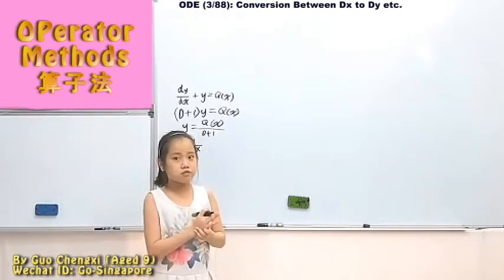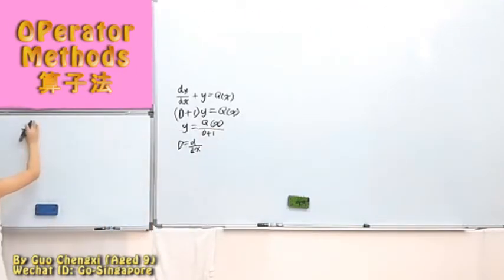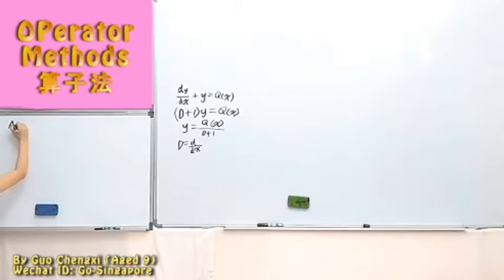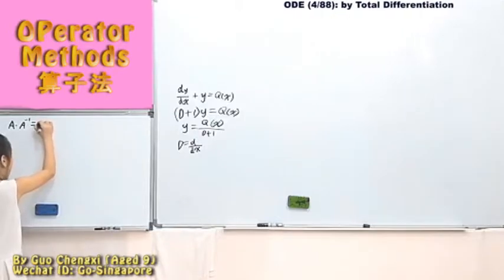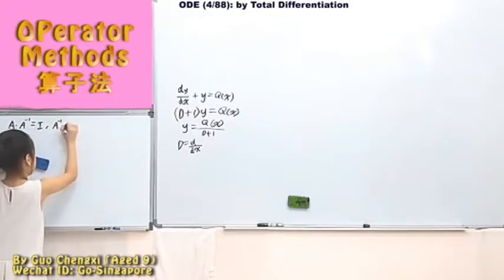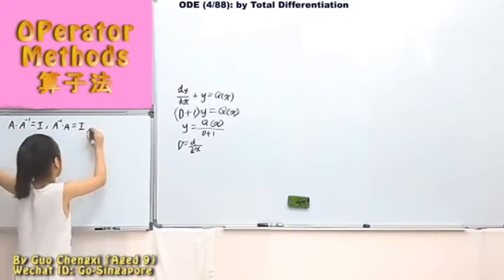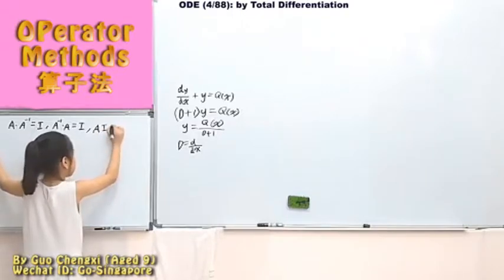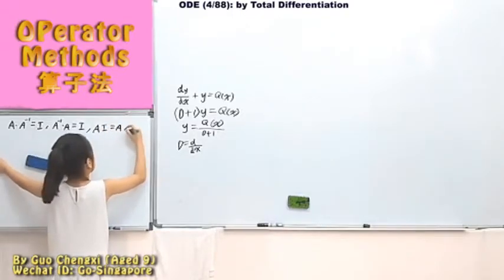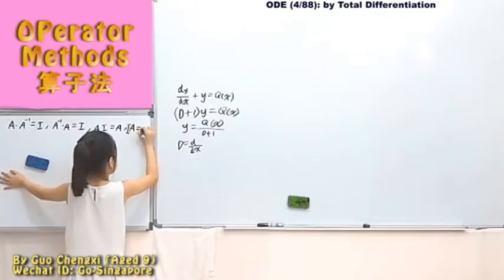That would remind you of matrix. For matrix, we've learned that A times A-inverse is equal to I. A-inverse times A is also equal to I. So basically these two are equal. A-inverse times A is equal to A.